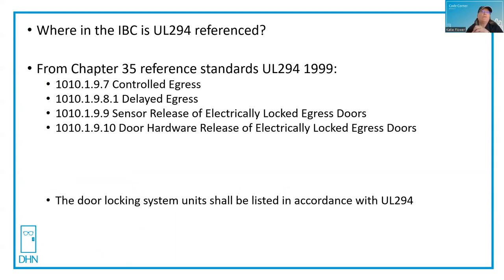UL 294 1999 edition is referenced by Section 1010.1.9.7 for controlled egress, 1010.1.9.8 for delayed egress, 1010.1.9.9 for sensor release of electrically locked egress doors, and 1010.1.9.10 for door hardware release of electrically locked egress doors.